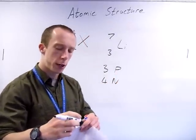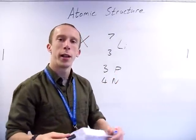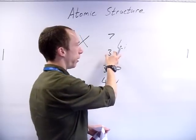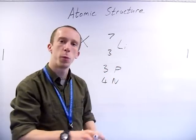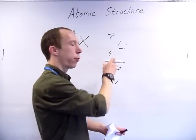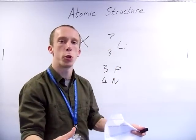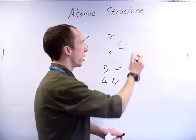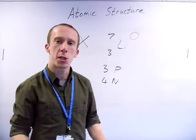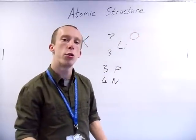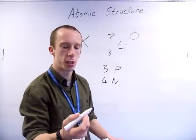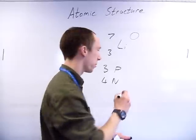To work out the electrons - in an element, the number of electrons will always equal the number of protons, because the protons give three plus one charges. The overall charge is neutral, so we must have three negative one charges to cancel it out.